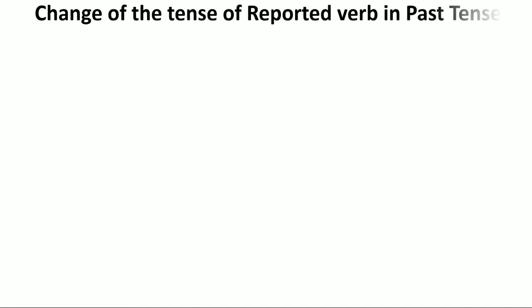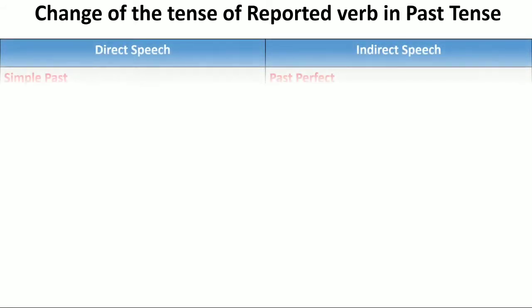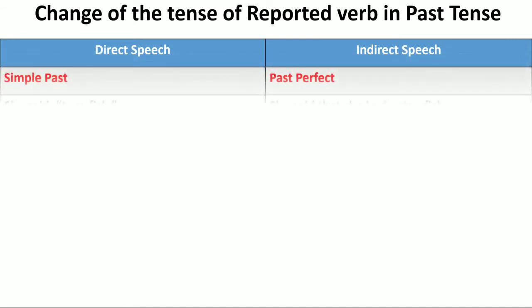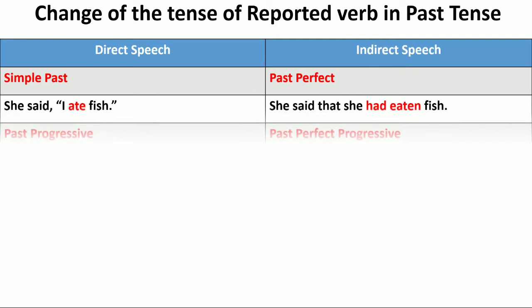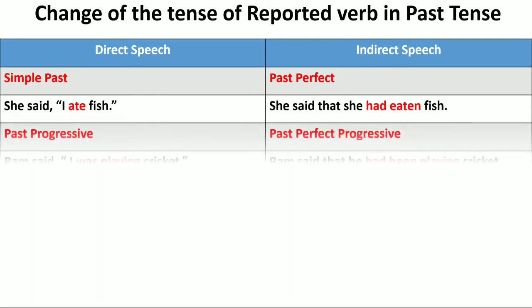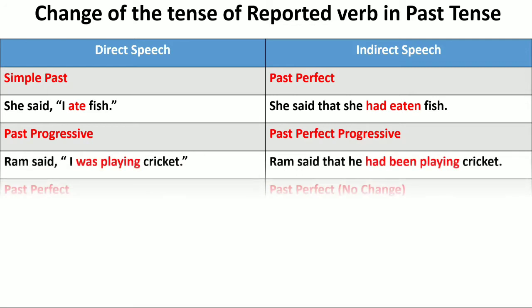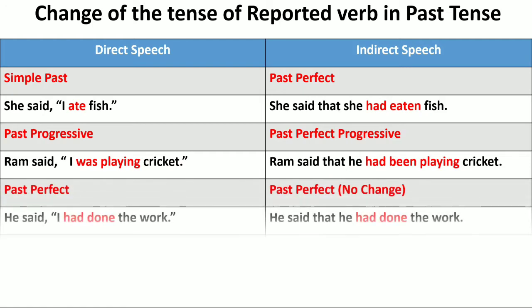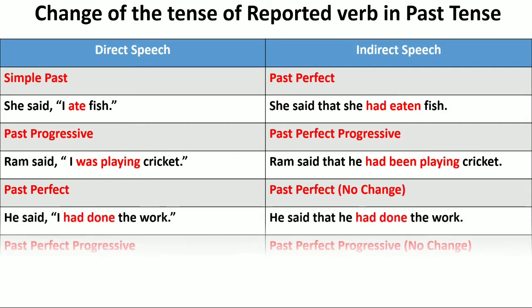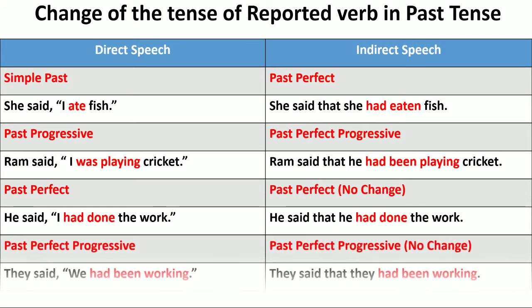Change of the tense of the reported verb in past tense — see the table. Simple past will be changed to past perfect: 'She said I ate fish' becomes 'She said that she had eaten fish.' Past continuous or past progressive will be changed into past perfect progressive: 'Ram said I was playing cricket' becomes 'Ram said that he had been playing cricket.' Past perfect — no change in indirect speech: 'He said I had done the work' becomes 'He said that he had done the work.' Past perfect progressive — also no change.